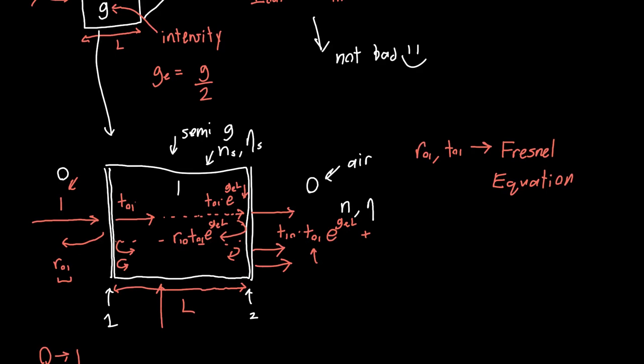So the first one is just this term, and then we've got various terms with increasing powers. You might notice a pattern here: each time we're multiplying by R_10 squared and E to the two G_E L.